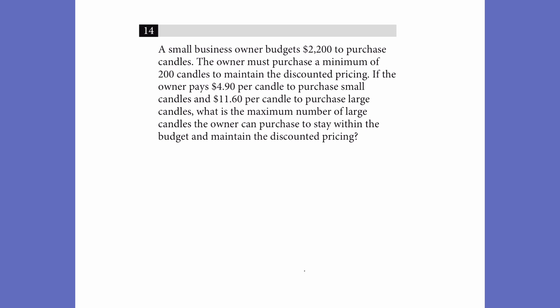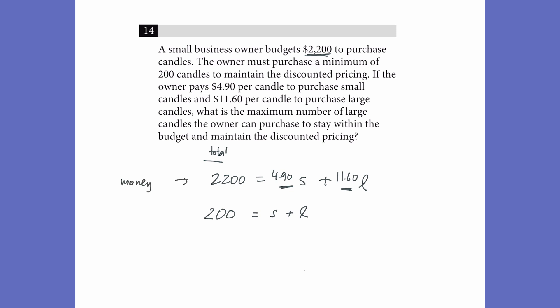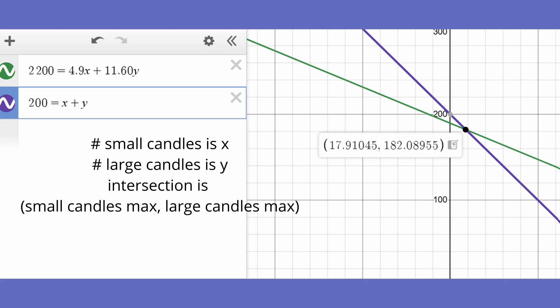This is a pretty common word problem — it's a system of linear equations in disguise. The way to set these up correctly every time is to have one equation for the amount of money something costs and one equation for the amount of the thing you have — in this case, candles. So we'll have a 'how many candles' equation and a 'how much money' equation. There's a certain amount of money to purchase candles: 490 cents to purchase a small candle and 1160 cents to purchase a large candle — that's our first equation. Then we know we want at least 200 candles total, which is just S plus L. Now we can use Desmos to solve this, and we get 182 large candles.